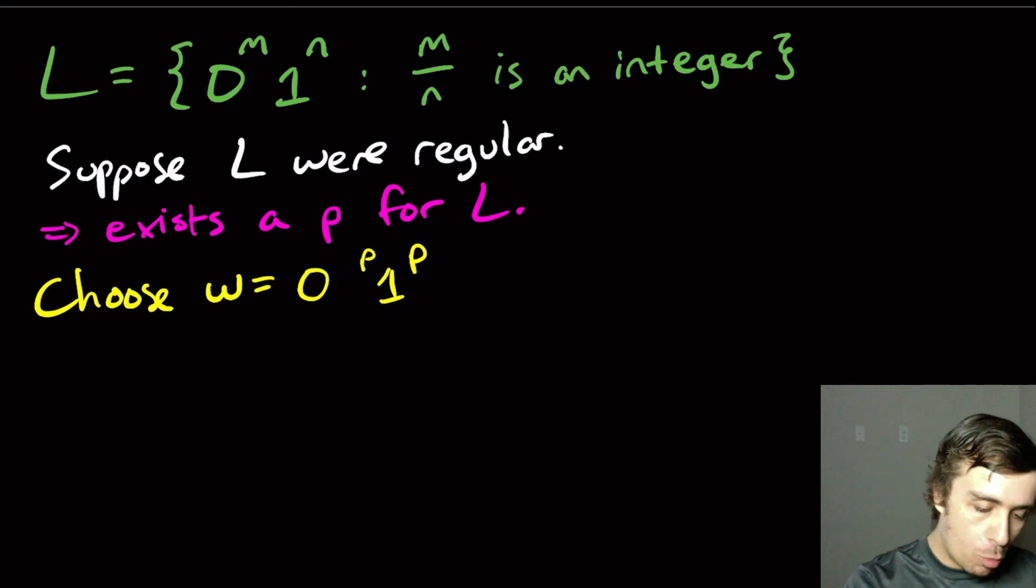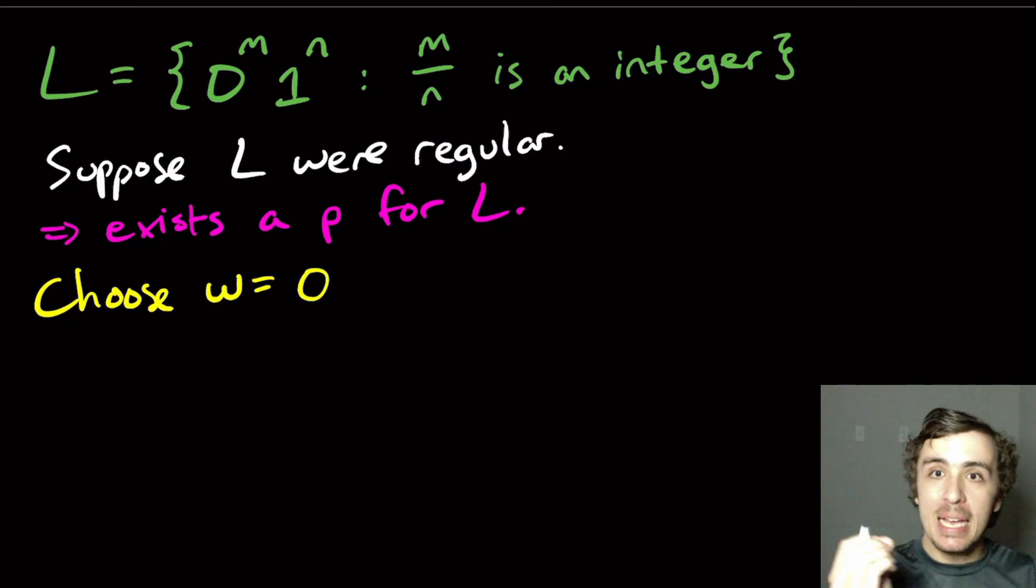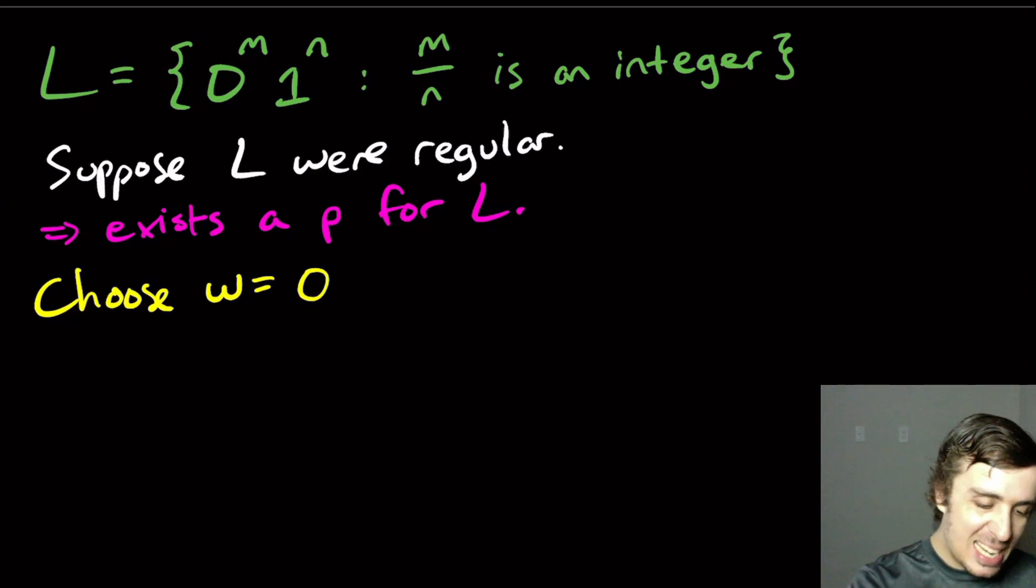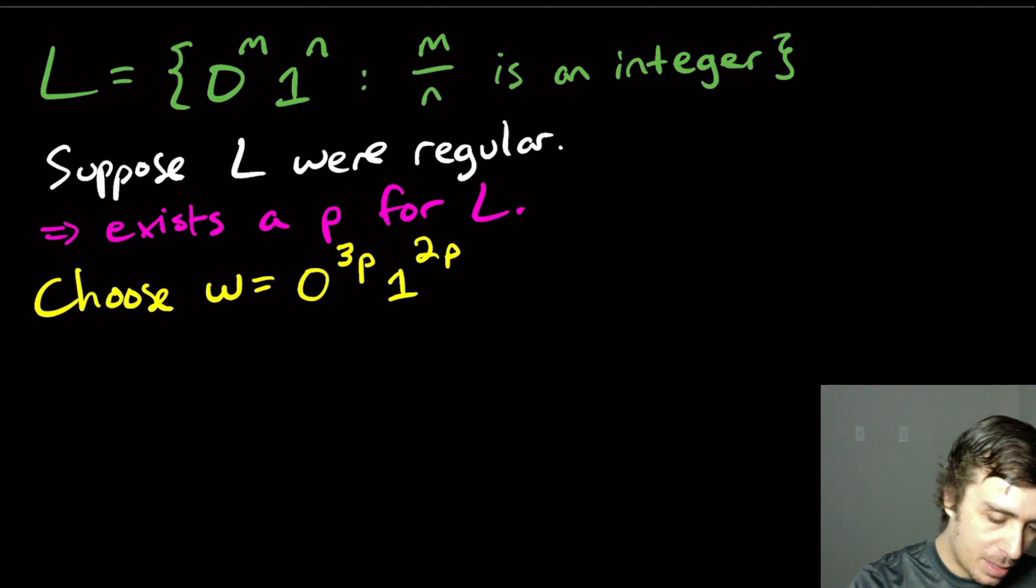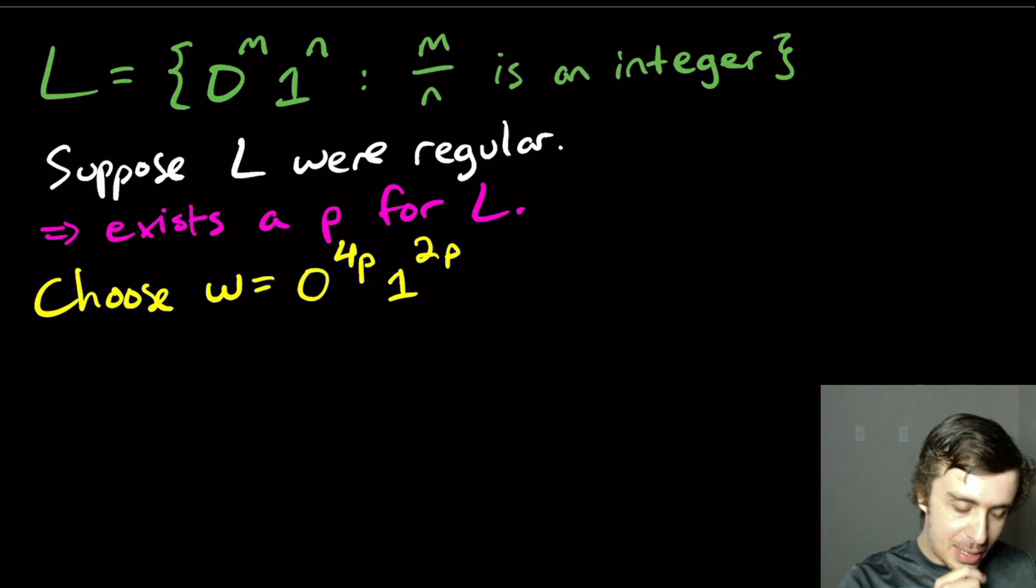However, what if we did this? What if we said, OK, let's pick some other fraction. We've got to pick a fraction for which it is an integer when dividing here at the start, but we will end up in something that is not an integer. So let's pick, let's say, 3p here and 2p here. Oh, sorry, 4p. 4p, that's what I wanted. So then let's see.